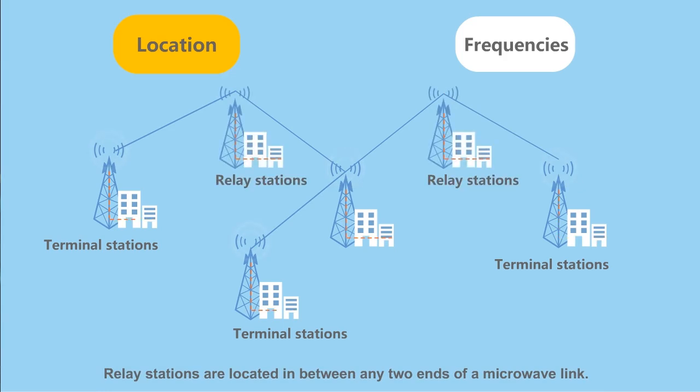Relay stations are located in between any two ends of a microwave link and transmit signals in two directions. These stations can add and drop services, baseband interconnection, or can also be made not to add or drop services, IF or RF interconnection.